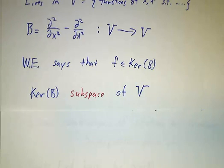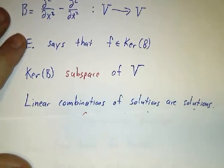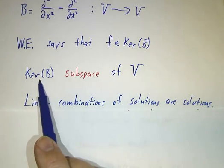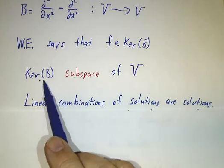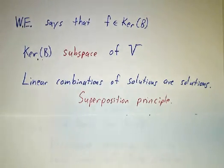And we know that the kernel is a subspace, all kernels are subspaces, and this tells you that if you take linear combinations of solutions, that is linear combinations of elements of the kernel, you get more solutions. You get more elements of the kernel. This is called the superposition principle.